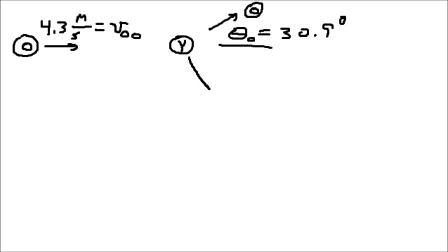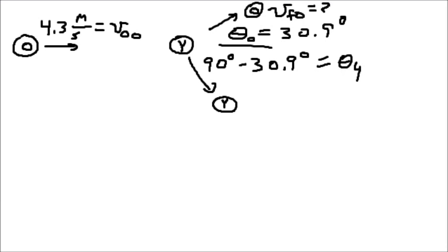And theta yellow is 90 degrees minus 30.9 degrees. So we don't have to calculate the actual value. We want to find out the final velocity of the orange disc. We can use momentum conservation strictly. We have enough information. We don't have to invoke conservation of energy, although this is a perfectly elastic collision.